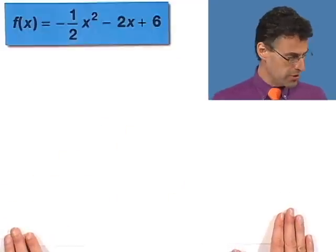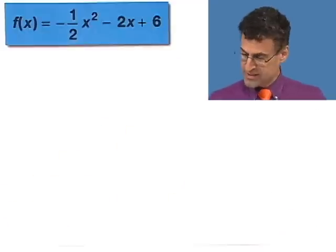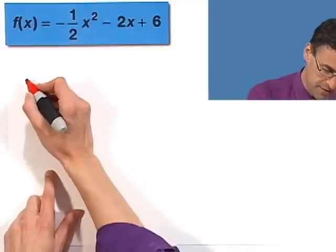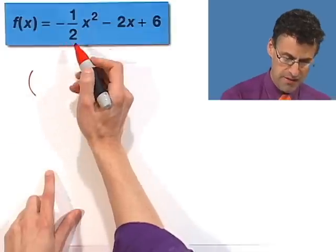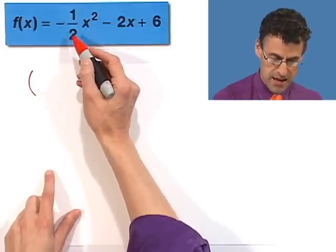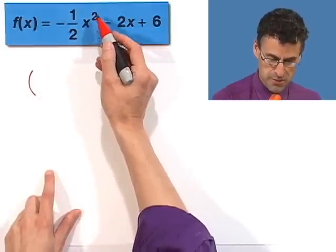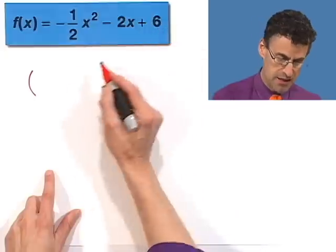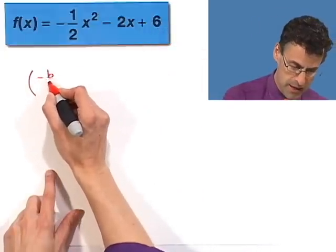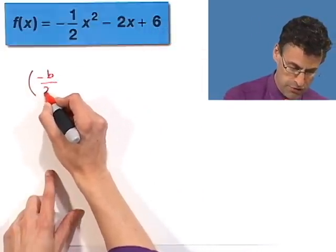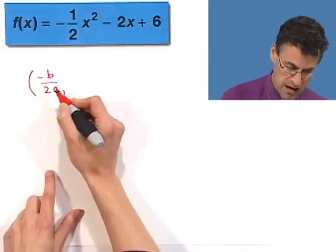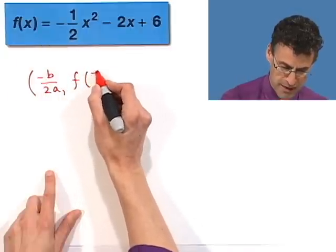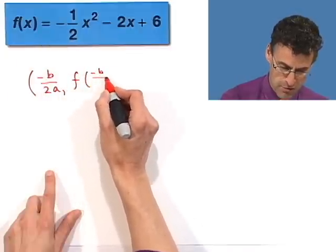I want to tell you exactly how to find that vertex. The formula, if you write it in standard form as ax squared plus bx plus c, is going to be negative b over 2a for the x-coordinate, and then the value of the function there — f of negative b over 2a — for the y-coordinate.